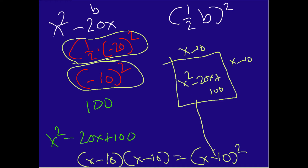Our length and width are each x minus 10. We completed the square using this process. We took a binomial and converted it into a trinomial, then completed the square to simplify it. All right, let's do another example.